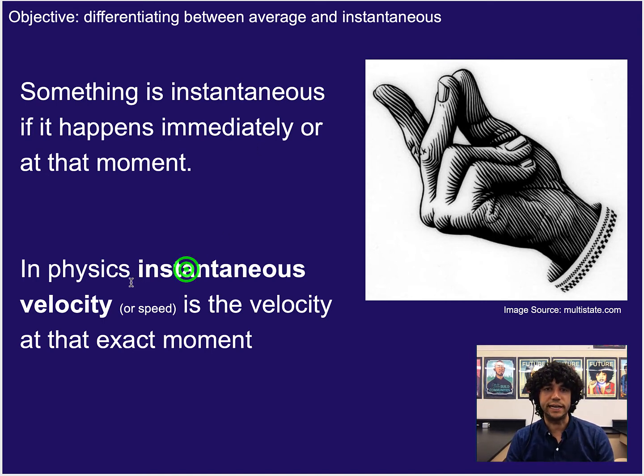So in physics, instantaneous velocity or instantaneous speed is your speed or velocity at that moment. It would be like if you looked down at the speedometer, what speed are you going at that exact moment when you see it? A second later, it might be different. And that would be a different instantaneous velocity.